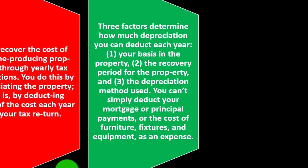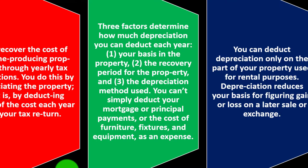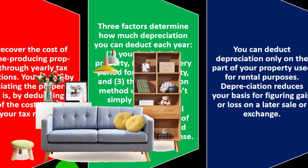You can't simply deduct your mortgage principal payments or the cost of furniture, fixtures, and equipment as expenses. These large items that are going to be benefiting you for substantial periods into the future are the items you would typically need to be putting on the books as an asset. That would include the property itself and other large costs such as furniture, fixtures, and equipment.